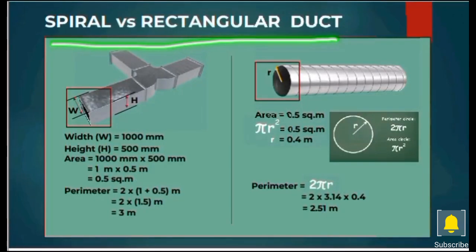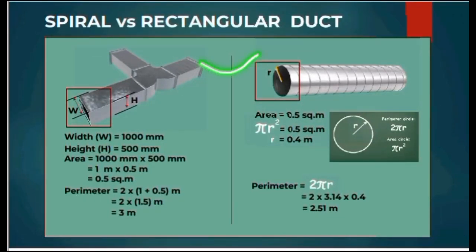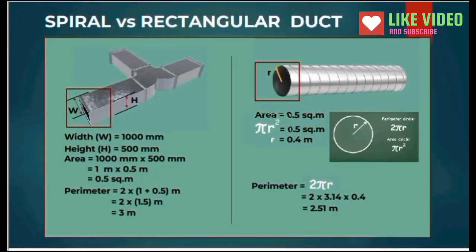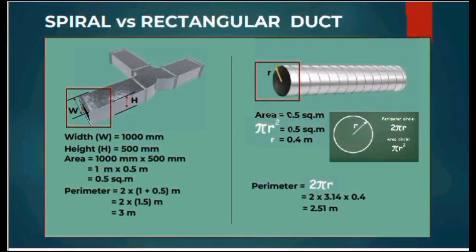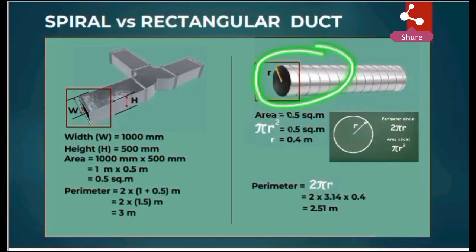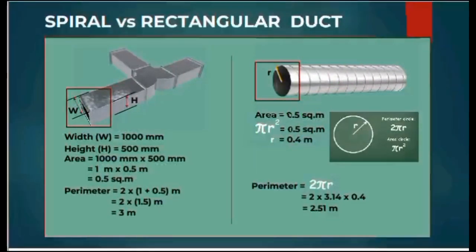Here we can see both spiral and rectangular duct and how to calculate the area of both ducts. In rectangular duct, we have width and height in millimeters. By having two sides, we can calculate the area for any rectangle, which is equal to length into width. For spiral duct, we can calculate diameter and length in millimeters. The formula to calculate the area of spiral duct is pi r squared into length, which gives area in square meters.